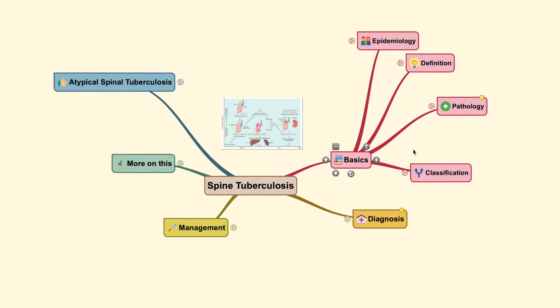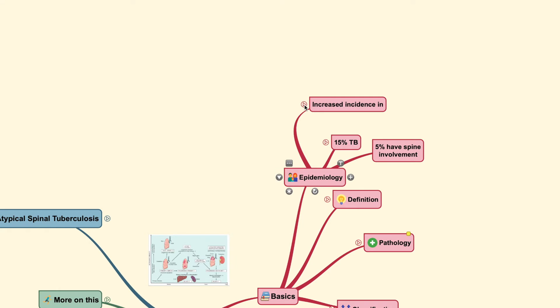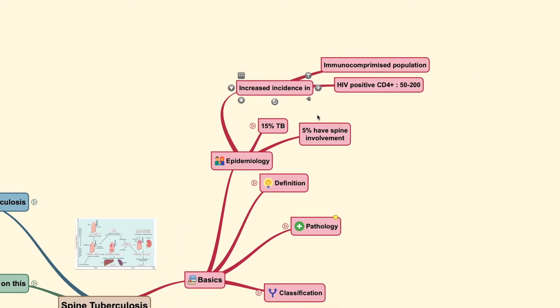Now, let's move on to the basics. Basically, you can find this pathology with an increased incidence in individuals with immunocompromised state. And it could also be found in HIV-positive patients with CD4 count of around 50 to 200 cells.